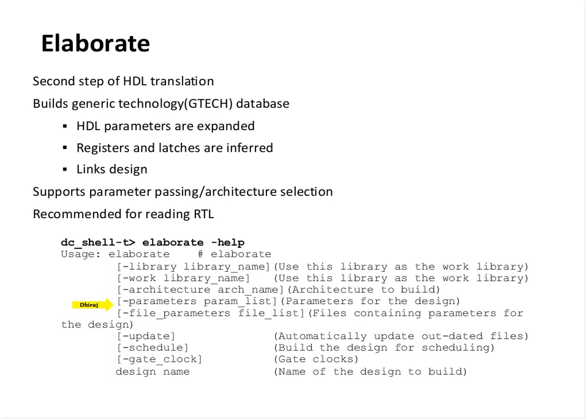It supports parameter parsing and architecture selection — these are VHDL-specific. The most important option is the design name, which is the top-level of the design. In the last lecture we saw the design of an accumulator containing an adder, a MUX, and a register block. The top-level module, which is the accumulator module, is given here. You analyze all the RTL files but elaborate only from the top. Elaboration should be done at the level at which you want to perform synthesis.